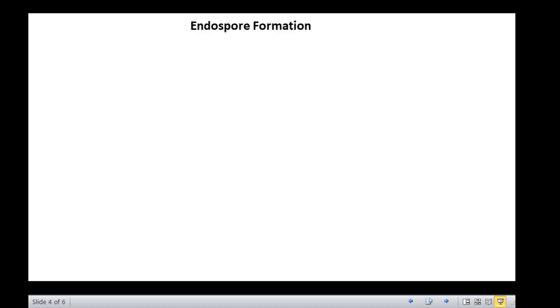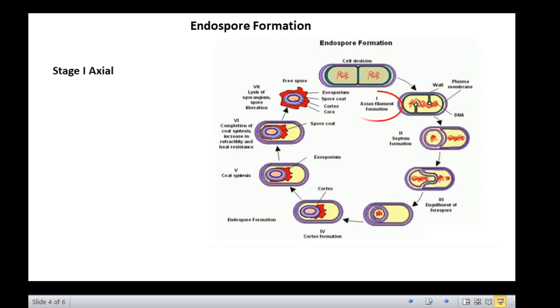Endospore formation is generally initiated when conditions for growth of the vegetative cells become unfavorable. The process of sporulation takes place in seven defined stages. The first stage is axial filament formation. During this period, the nuclear material, DNA, undergoes replication and a copy is produced. This is the first indication that sporulation is taking place.